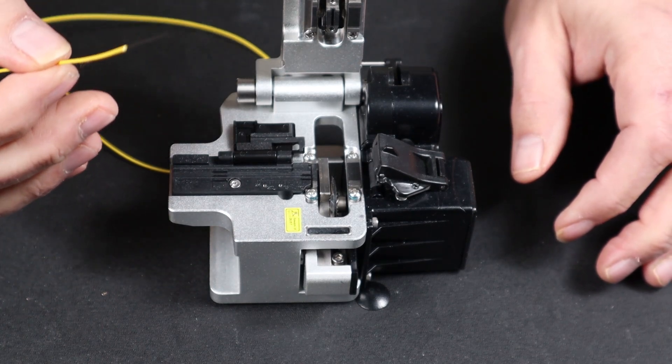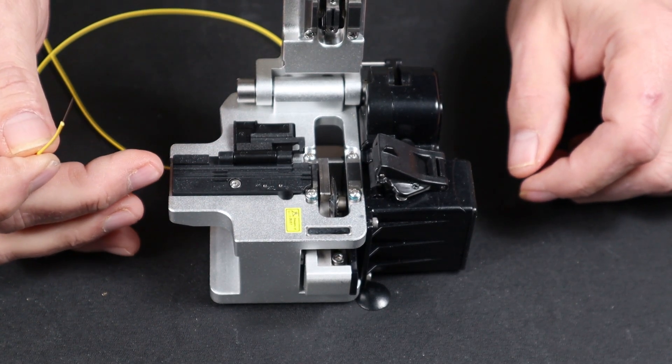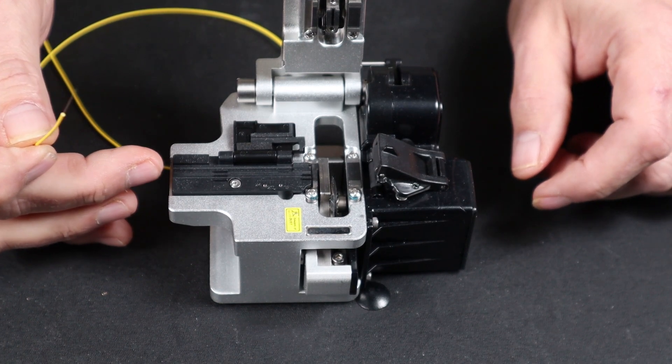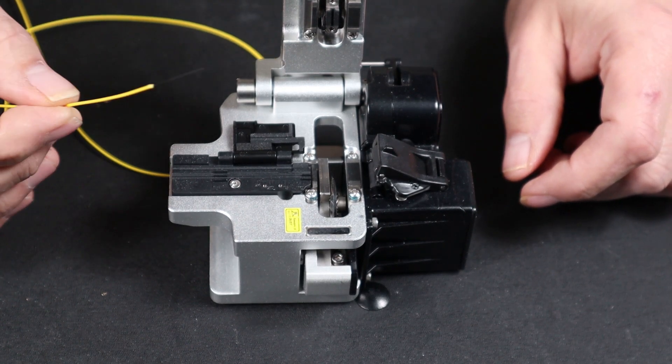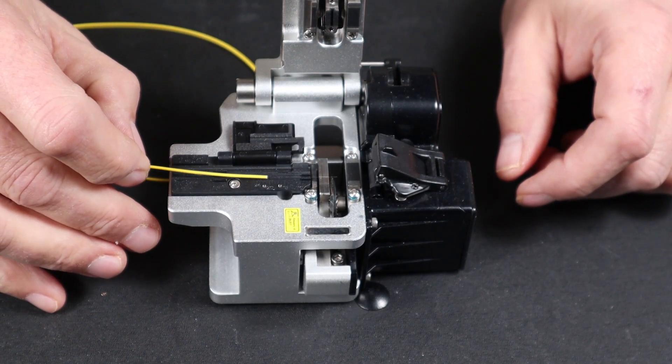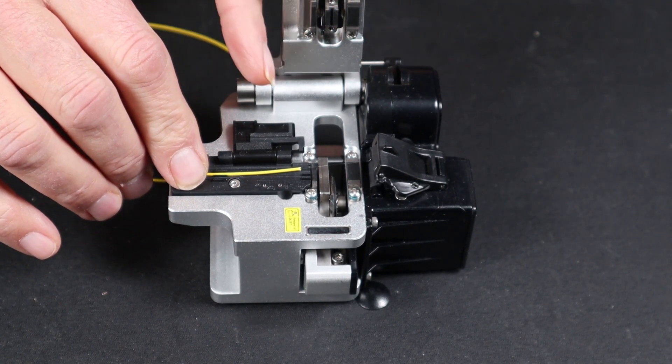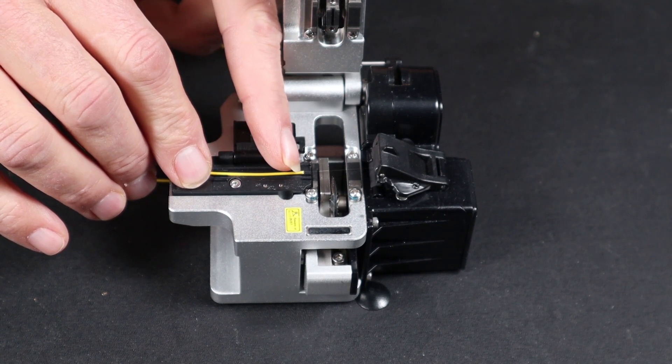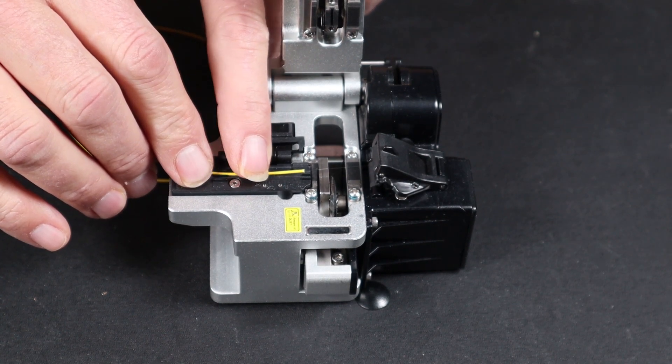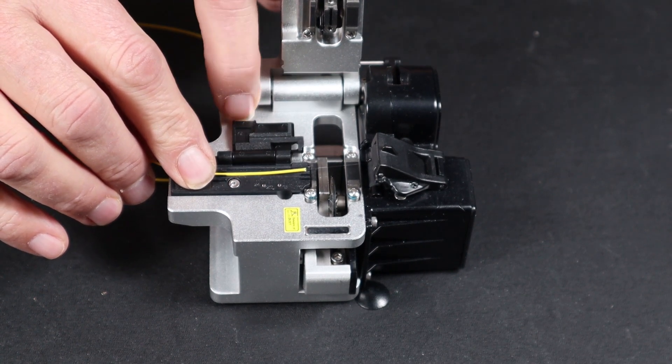For cleaving fiber using the fixed holder, there are three channels: 250, 900, and 2 millimeter, 3 millimeter channel. I am using the 900 micron fiber. Place your fiber in the channel and bring the tip of your jacketing up to somewhere between 7 and 10 millimeters on the scale.